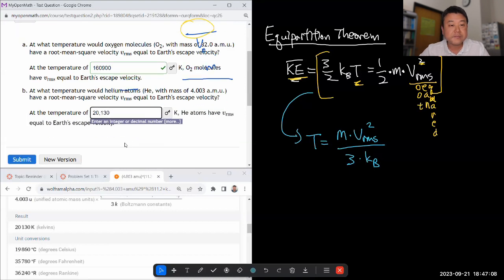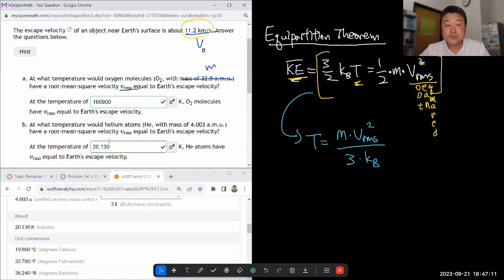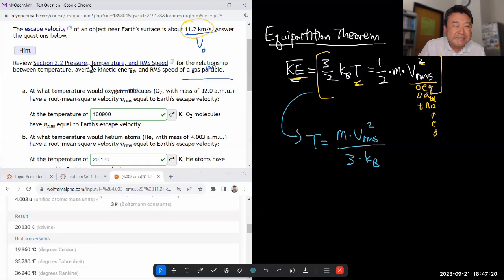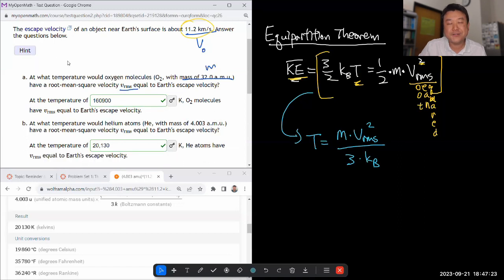20,130. That's a comma, not a dot. Yeah. So one might wonder, why doesn't Earth have any helium atoms? If you read the textbook, is that a hint? Maybe. If you look at the textbook, there's a Maxwell-Boltzmann distribution of velocities. So this V_RMS, that's the average. But when you look at the distribution at a given temperature, there are ones at the higher, higher velocities. So those ones will escape. So over time, Earth leaks helium.